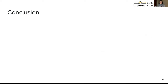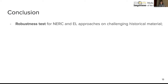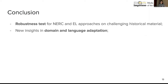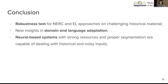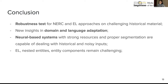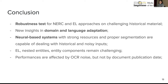As a conclusion, this HIPE evaluation task gave us the opportunity to test the robustness of NESC and linking approaches against challenging historical multilingual noisy material, and we gained new insight into domain and language adaptation. Results show that it is possible to design systems able to deal with historical material, and their performance can compete with those obtained on contemporary text for some systems. However, entity linking, as well as nested entity and entity component recognition, remain quite challenging. Performance is affected by OCR noise — which is not a surprise — but more surprisingly, it is not affected by document publication date.